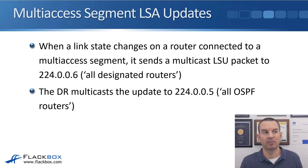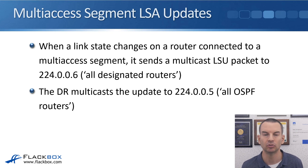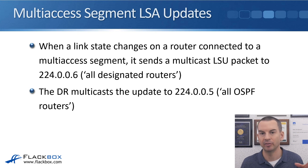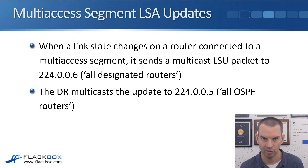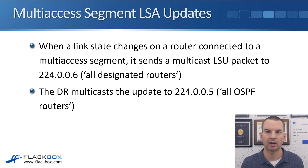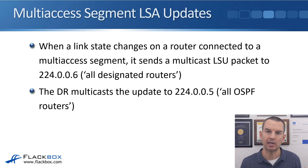When a link state changes on a router connected to a multi-access segment, it sends a multicast LSU (link state update) packet to 224.0.0.6 — the multicast address for all designated routers. Only the DR and BDR listen for packets sent to that address. So if any of R1, R2, R3, or R4 sees a link state change, it sends an update to 224.0.0.6 and both the DR and BDR learn about that change. Then just the DR — not the BDR — multicasts the update to 224.0.0.5 (all OSPF routers), so all OSPF routers on the link learn about it.